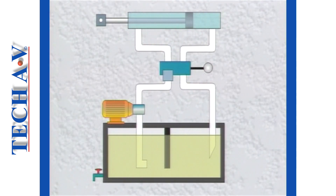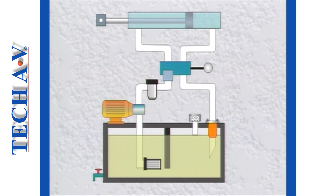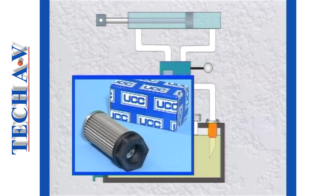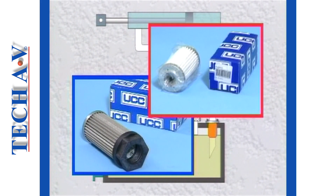To summarise, a system is protected from the harmful effects of dirt by using various strainers and filters. Strainers are normally installed on suction lines, whilst filters are fitted into the pressure and return lines. The primary purpose of a strainer is to protect the pump by trapping relatively large particles. The primary purpose of a filter is to trap small dirt particles, thus preventing damage to control valves and sludge formation in the tank.